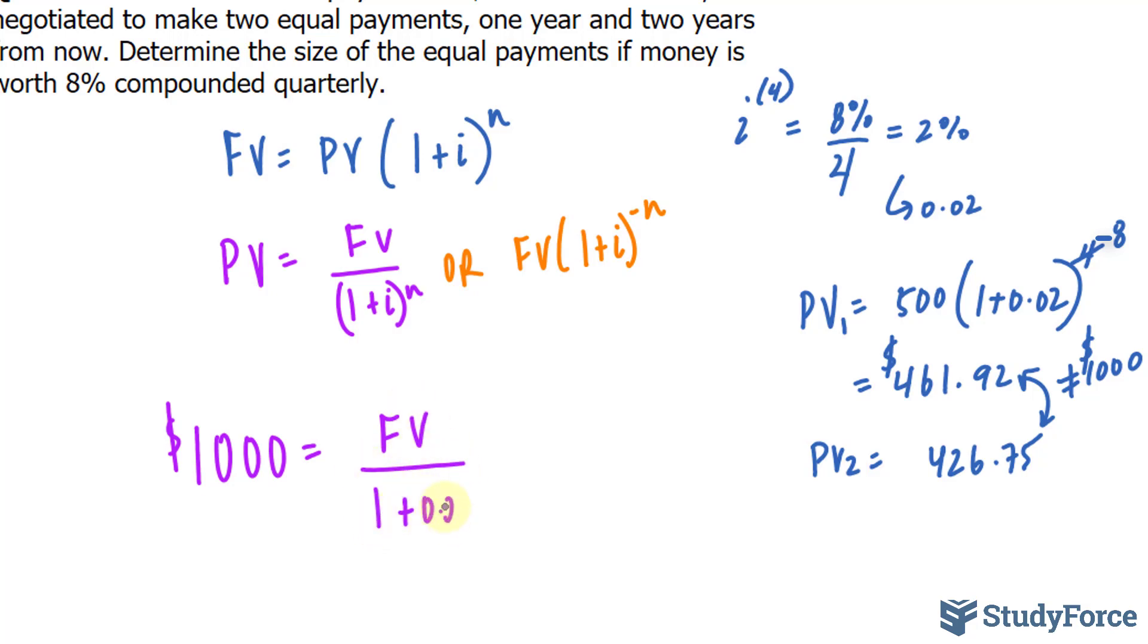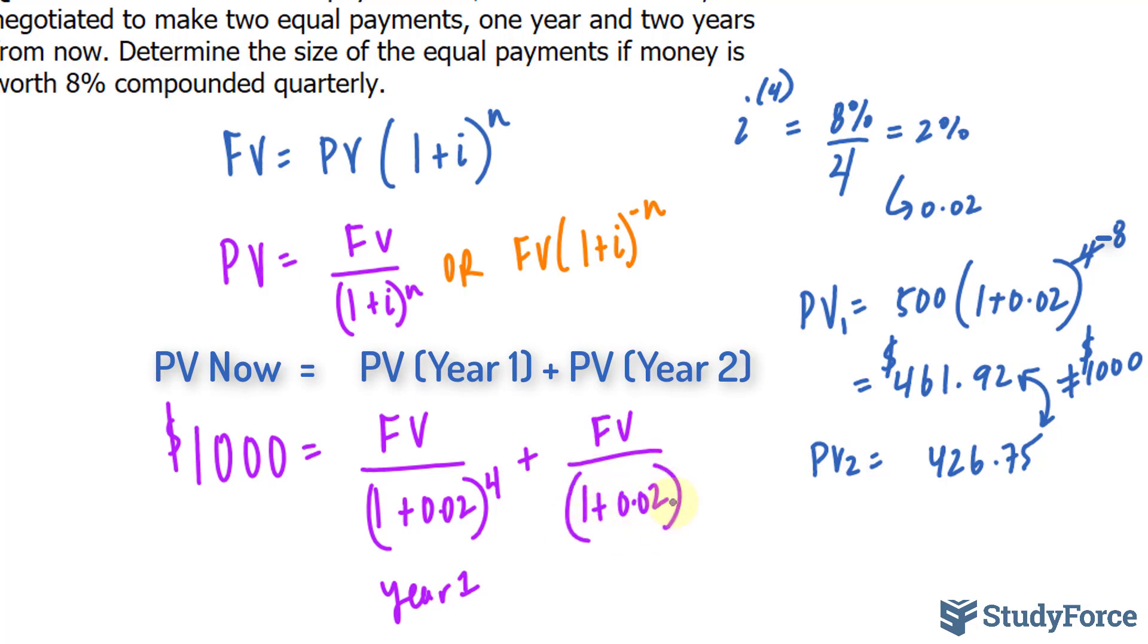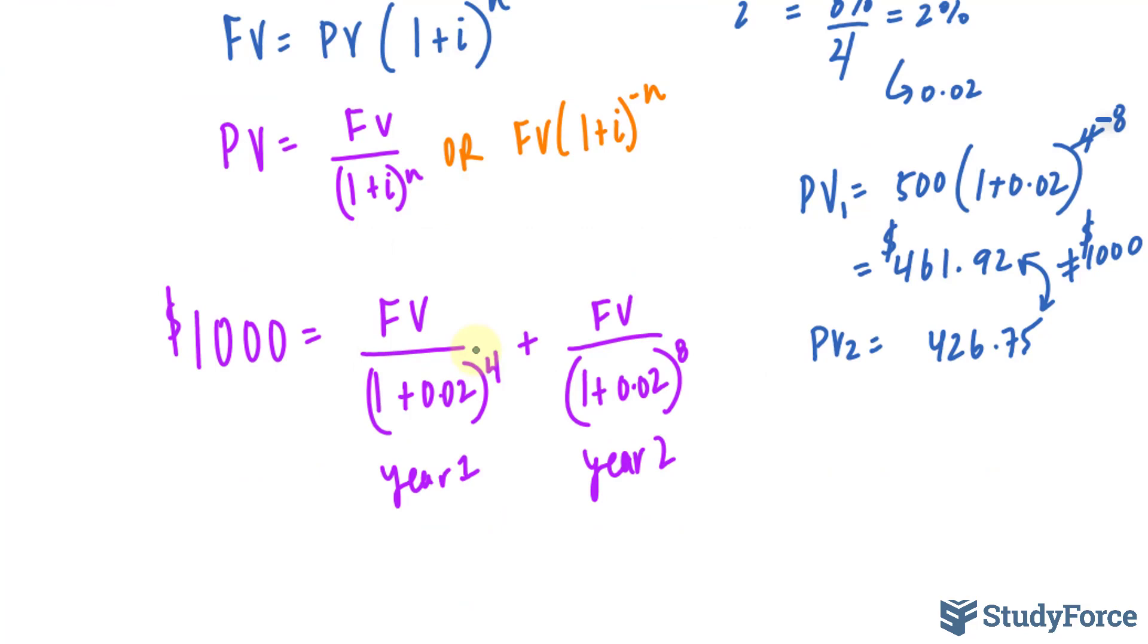What future value (1+0.02)^-4 plus the same future value (1+0.02)^-8, and that's year 2. What future value will make this statement true? Let's go ahead and solve this equation for FV and that will lead us to our answer.